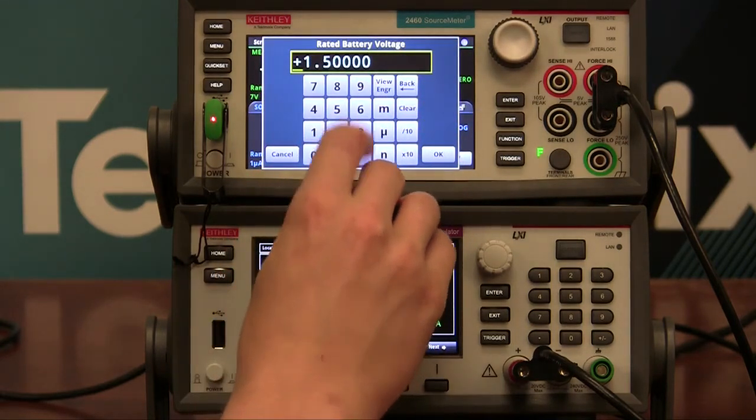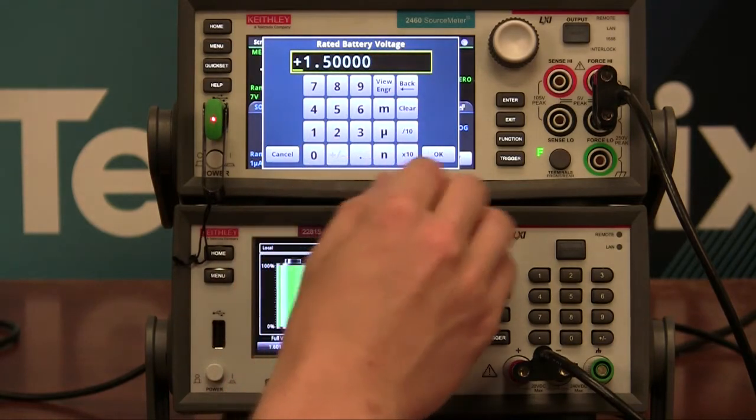So now, you have to set your rated battery voltage. Since it's a double A model, it's 1.5 volts.